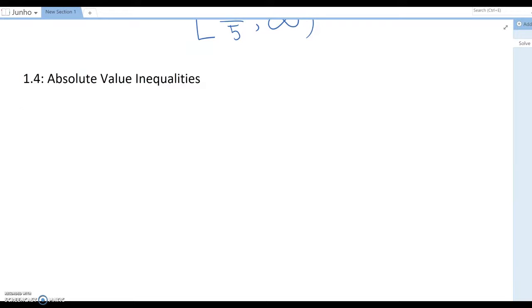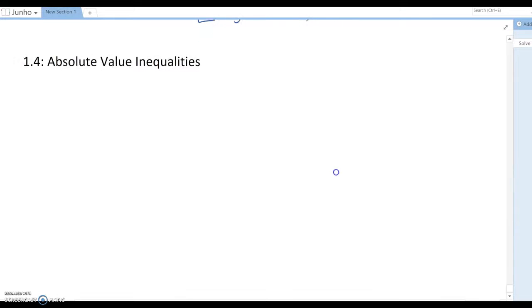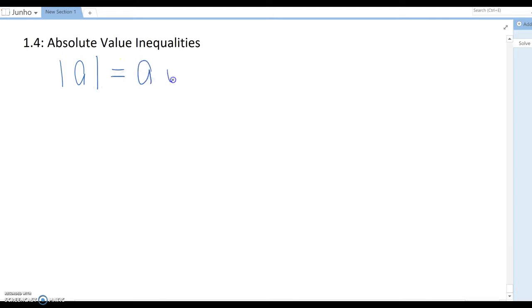Lesson 1.4 Absolute Value Inequalities. So last time we talked about absolute value. What does absolute value mean? If we indicate any absolute A, then it should be A units from the zero. That's what this means. So it was kind of equation. Now we are finding inequality.